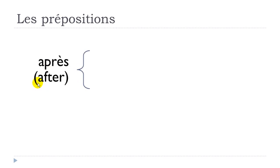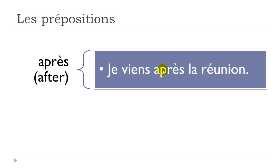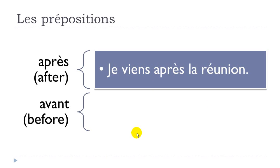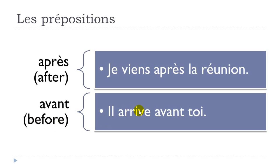Après means 'after': Je viens après la réunion — I come after the meeting. Avant means 'before': Il arrive avant toi — he arrives before you. 'Toi' is the emphatic pronoun for 'you'. Depuis means 'since' or 'for': Nous vivons ici depuis 2011 — we have been living here since 2011. Or: Nous vivons ici depuis un an — we have been living here for one year.